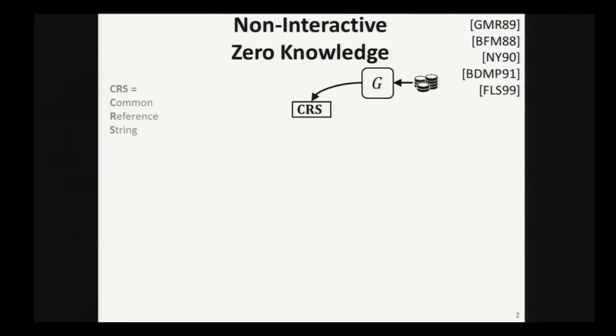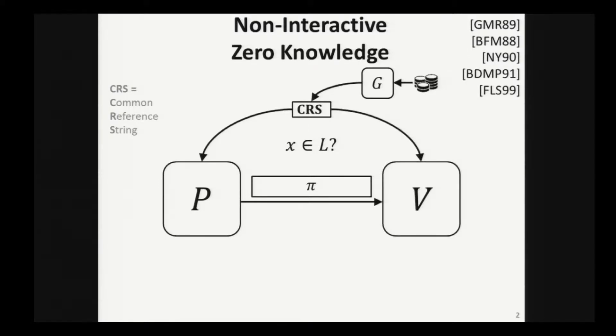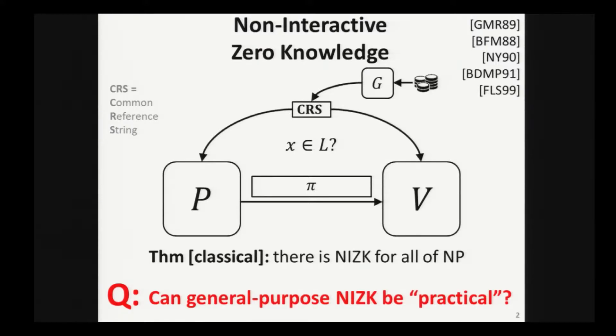The CRS can be used to prove statements, like is an instance X in a language L. Any prover can use the CRS to produce a non-interactive zero knowledge proof for such statements, and it can also be used to verify such proofs by the verifier. In a beautiful line of work from the 80s and 90s, we know that under various cryptographic assumptions, we know how to obtain NIZK for all languages in NP. At the highest level, the question that we study in this work is to what extent can general purpose NIZK be practical.